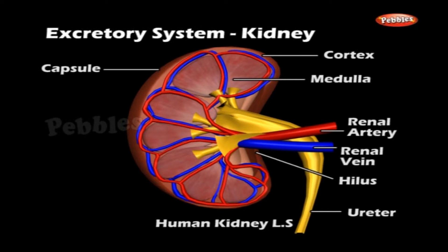The renal artery and nerve enter, and the renal vein and ureters exit through the hilus. Internally, the kidney is divided into an outer cortex and an inner medulla. The medulla consists of several cone-shaped renal pyramids. The pyramids open into funnel-shaped depressions called calices, which converge to form the renal pelvis. The renal pelvis then narrows to form the ureter, which opens into the urinary bladder.